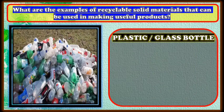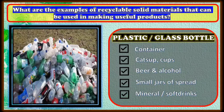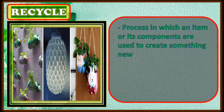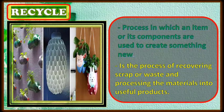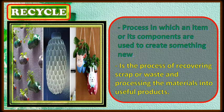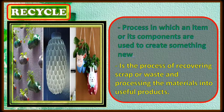Another example is plastic and glass bottles. These consist of containers such as ketchup bottles or cups, beer or alcohol bottles, condiment spreads, and mineral water or soft drink bottles. Recycle is a process in which an item or its components are used to create something new — the process of recovering scrap or waste and processing the materials into useful products. Instead of throwing them away, think of how you can make new materials out of them through recycling.